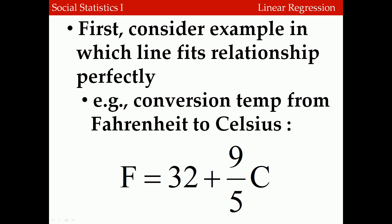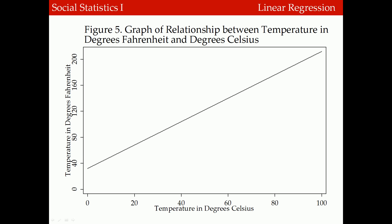Consider an example of a line that perfectly fits a linear relationship: the conversion of temperature from degrees Celsius to Fahrenheit. We multiply degrees Celsius by 9/5 and add 32 to get degrees Fahrenheit. Here, 32 is the intercept and 9/5 is the slope. For example, a value of 40 degrees Celsius plugged into the equation generates a predicted value of 104 degrees Fahrenheit. This is an exact straight-line relationship.